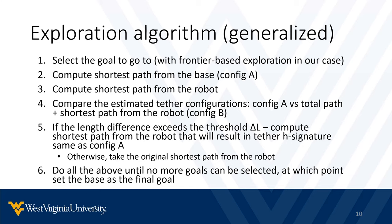Step 5 is the most important: if the length difference computed in the previous step exceeds a predefined threshold delta L, a new path for the robot is computed that would put it in the same tether configuration as configuration A, meaning the most optimal. If delta L is not exceeded, the robot can just take the shortest path from step 3. All of the above steps are repeated until no more goals can be selected, at which point the base is set at the final goal and the exploration concludes.